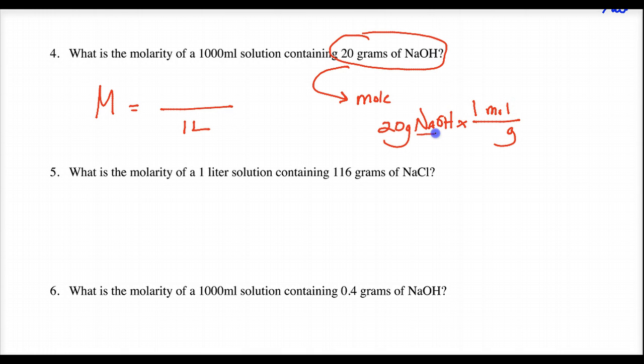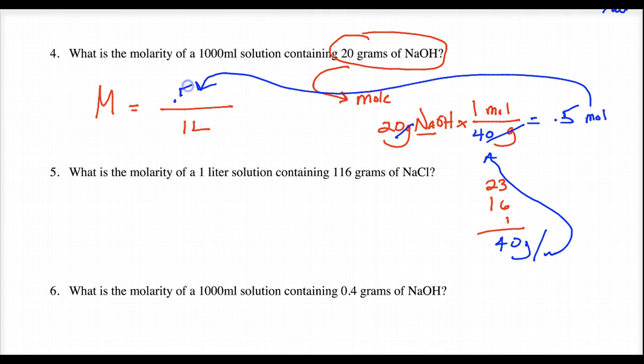Well, 23 plus 16 plus 1, last time I checked, that is 40. That's the formula mass. 40 grams per mole. So 20 divided by 40 is 0.5. Grams go bye-bye. We've got moles. And we plug these moles right here. 0.5 moles. Divide by 1, you get 0.5 M.